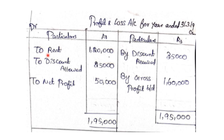In the profit and loss account, discount allowed 25,000 is an expense on the debit side. Discount received 35,000 is income on the credit side. By gross profit carried down: adding discount received 35,000 and gross profit 1,60,000 gives 1,95,000. The net profit after rent, discount allowed, and other expenses is calculated from this.